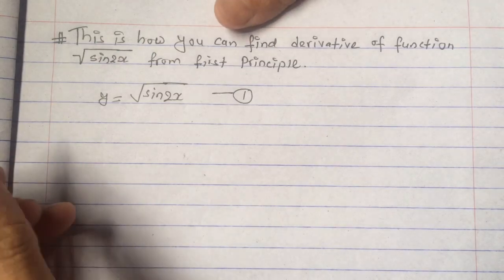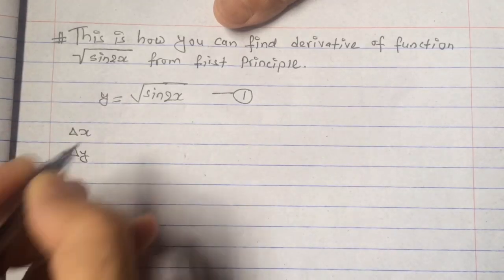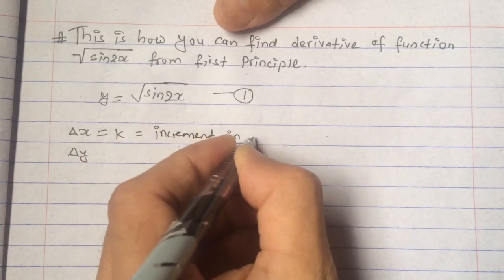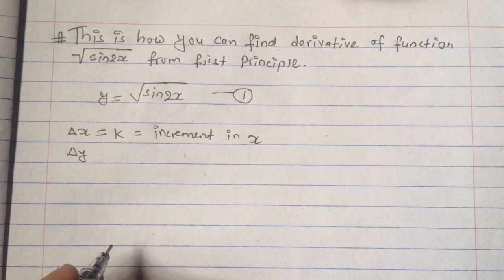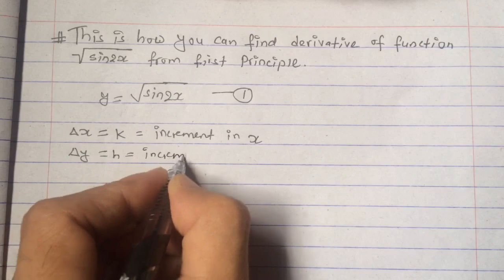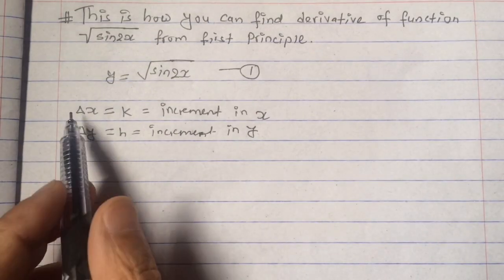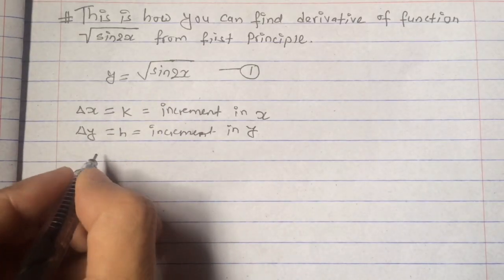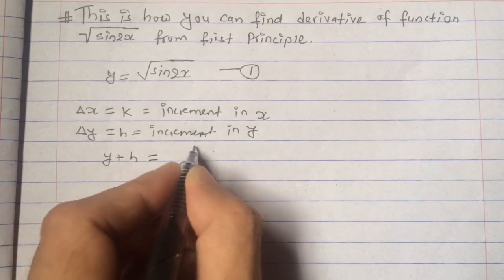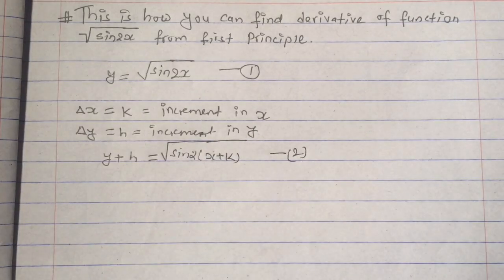Now to proceed further, we have to consider a few increments. Let those be Δx and Δy. Let's indicate Δx simply by k — this is an increment in x, that is, a small change in the value of x is Δx or simply k. And let Δy be indicated by h — it is also a small change in the value of y, or increment in y. After supposing these increments, we can write equation 1 in the form of Δx and Δy: y + h = √(sin(2x + k)). Let this be equation 2.